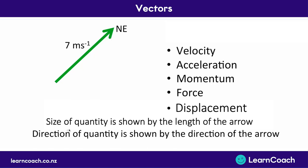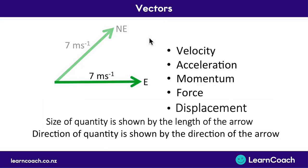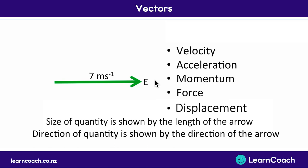In the same way, the direction of the quantity is shown by the direction of the arrow. So if we had the same speed pointing east, for example, we would have to draw the arrow the same length but in a different direction — it would be pointing east. And that is how we draw vectors.